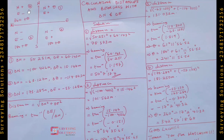For the fourth quadrant, northing is positive and easting is negative. After computing tan inverse of easting over northing, whatever bearing you get, you add 360° to it.